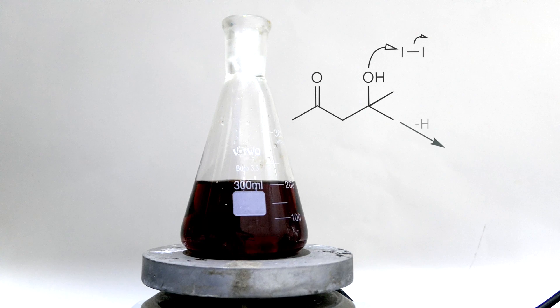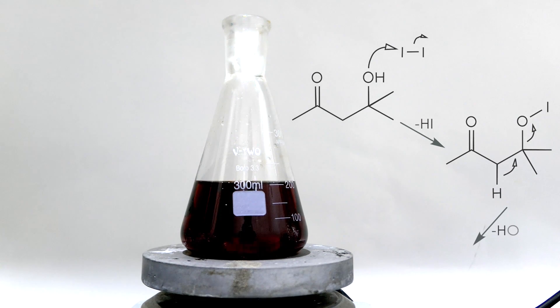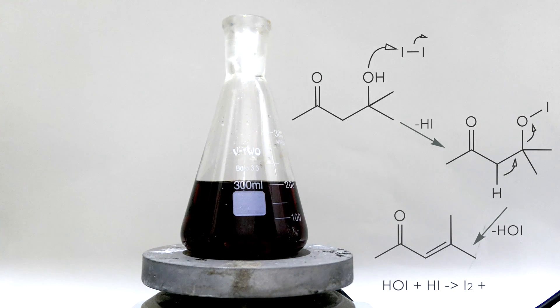First, iodine reacts with the hydroxyl group to form an oxygen-iodine bond with loss of hydrogen iodide. Then, this newly formed hypoiodite group is a good leaving group, thus promoted elimination and generated alpha-beta-unsaturated ketone. After that, hydrogen iodide and hypoiodous acid react together to regenerate the iodine catalyst.